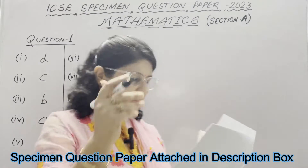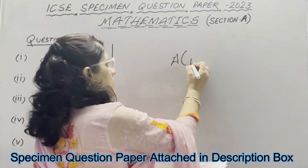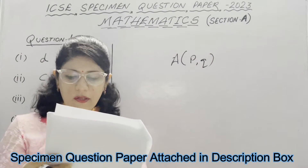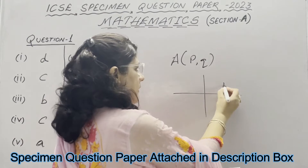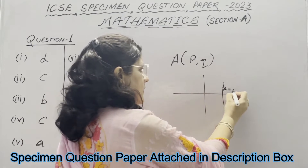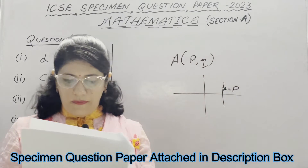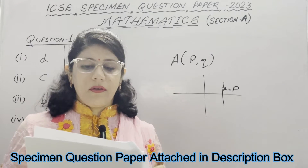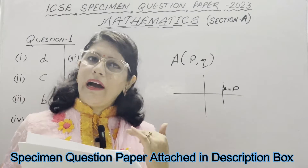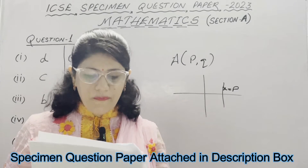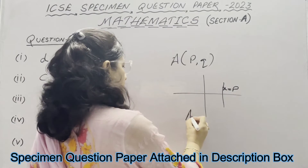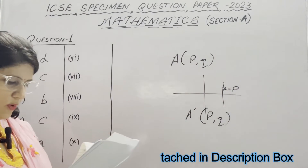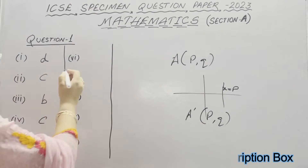In Part 6, point A(PQ) is invariant about x equals P under reflection. An invariant point is any point that remains unaltered under a given reflection. Since the point lies on the line of reflection x equals P, its image A dash is PQ again. The correct option is C.